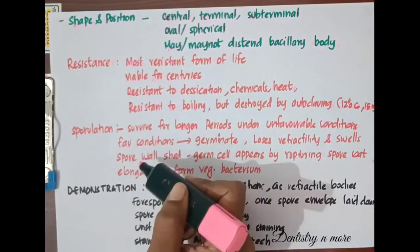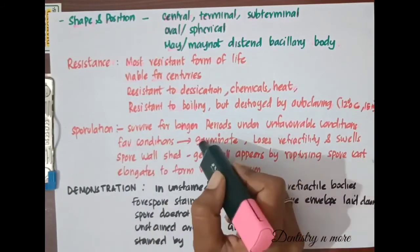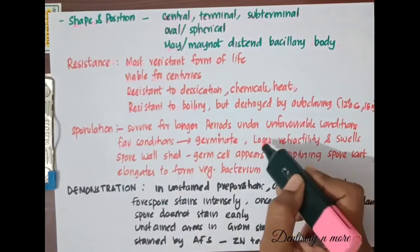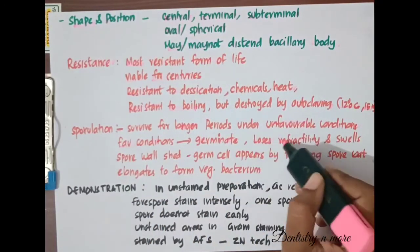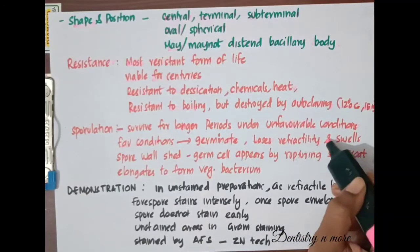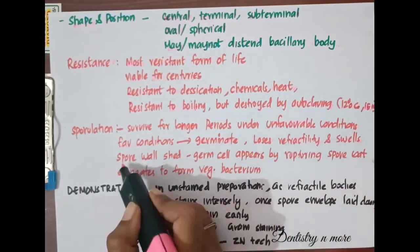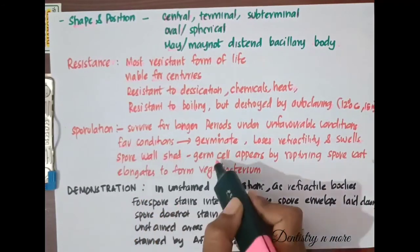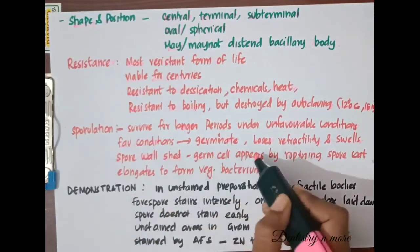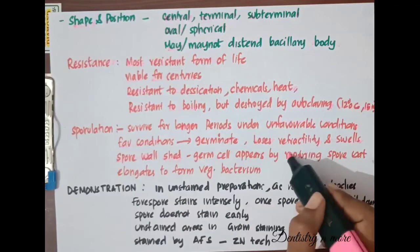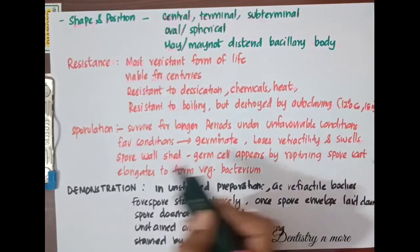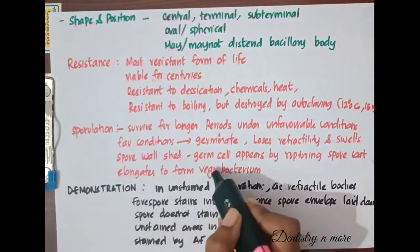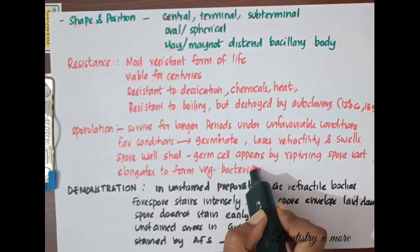Under favorable conditions, spores germinate. On germination, they lose their refractility and swell. The spore wall is shed, and a germ cell appears by rupturing the spore coat, then elongates to form vegetative bacteria.